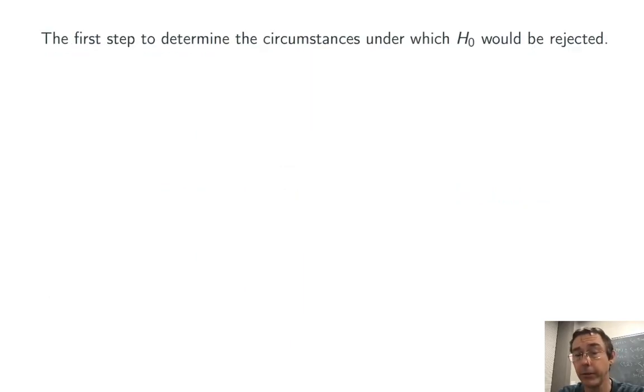There are going to be two steps to this process. First of all, we need to determine the circumstances under which the null hypothesis would be rejected. To say that a little differently, we're going to compute the critical region, the rejection region for this test.